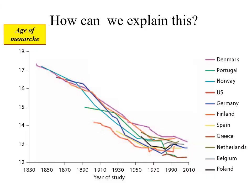How can we explain things like this? This is looking at the age of menarche — the first menstrual period — an indicator of when puberty occurs in girls, with the advantage that it's a single event often recorded, so there's good data on it. Looking at the age of menarche in various mainly European countries including the USA over the last 150 years, the age of menarche has been steadily declining wherever we look.